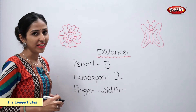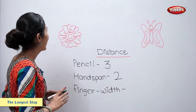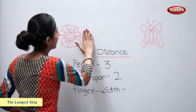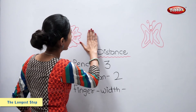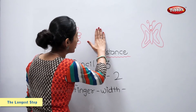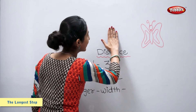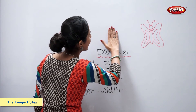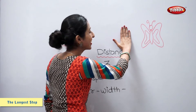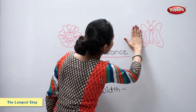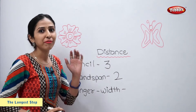Let us measure the distance using finger width. One. Two. Three. Four. And five. Five finger width.